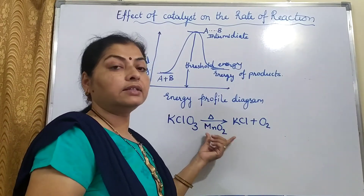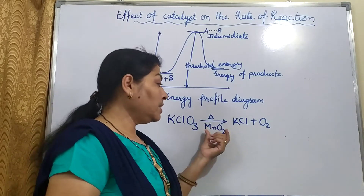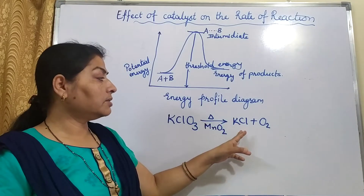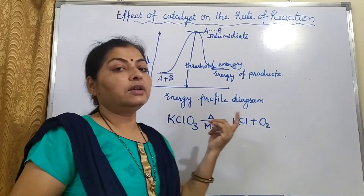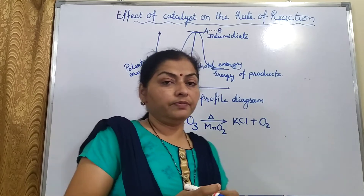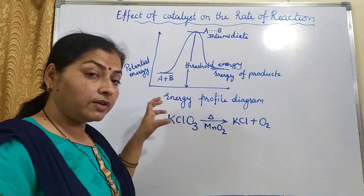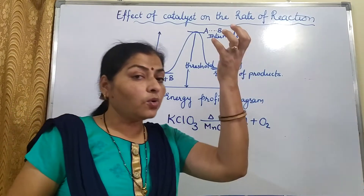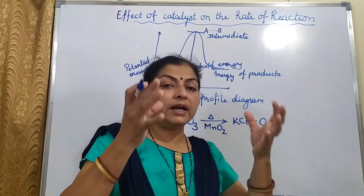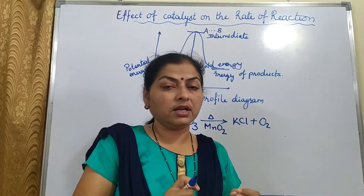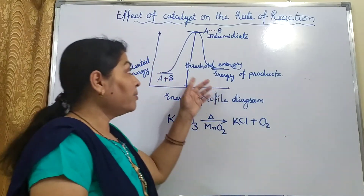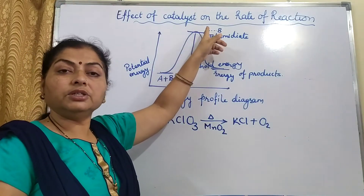MnO₂ acts as a catalyst for this reaction — due to the presence of MnO₂ the reaction becomes faster. Why does the reaction become faster? The catalyst offers a surface for the reactants to combine together. The catalyst surface holds on to those reactant molecules at quite lower energy and forms the intermediate by holding the reactant molecules on the surface. Once they are held on the surface, they can easily react at even lower energy compared to the threshold energy required for the intermediate to form.